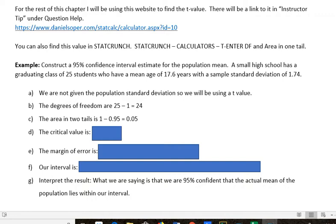We are not given the population standard deviation, so we'll be using a t-value. We are given our n, n is 25, that's the number of students that graduated. So the degrees of freedom are 25 minus 1, which is 24.